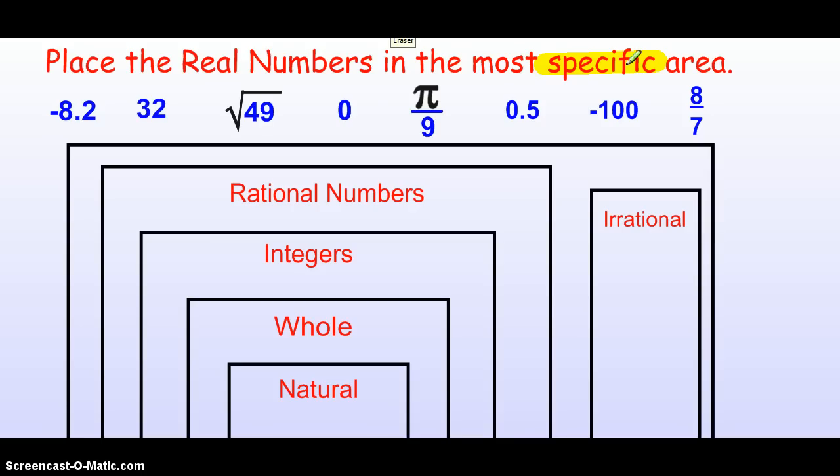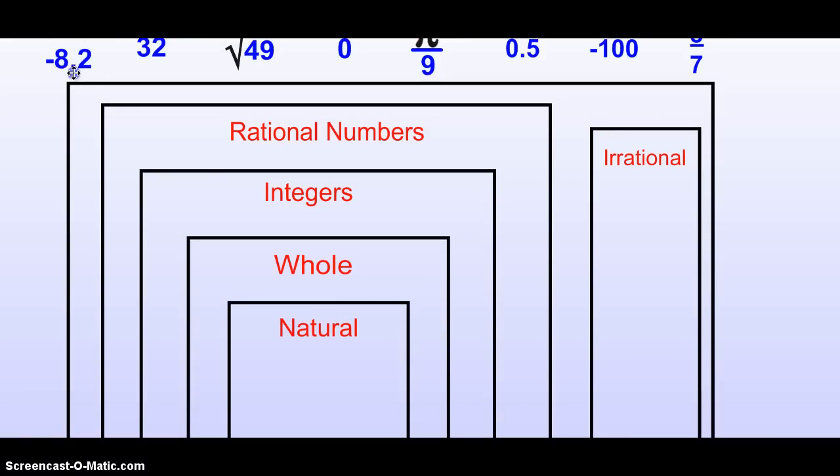You'll notice a lot of these numbers will fit in more than one set. So, when they say the most specific, think of it as the smallest group it will fall into. So, let's take here, negative 8.2.